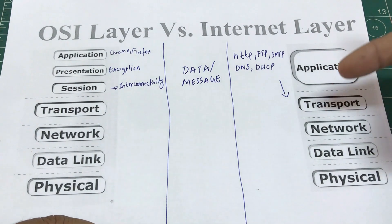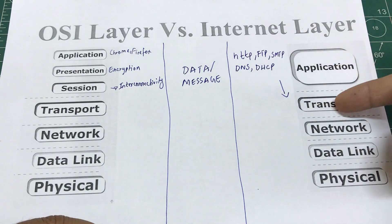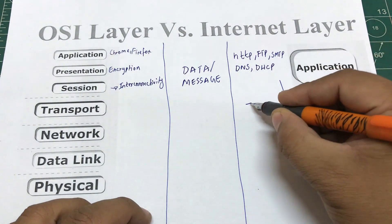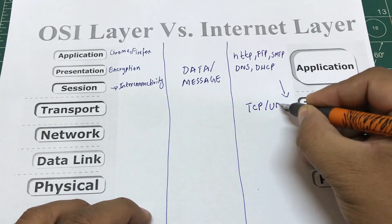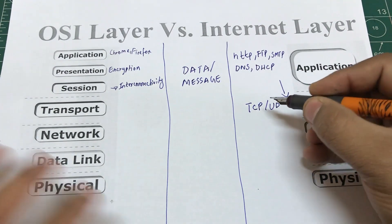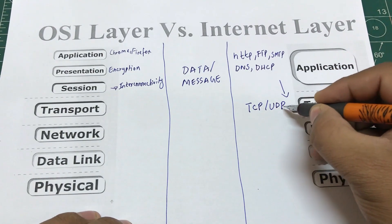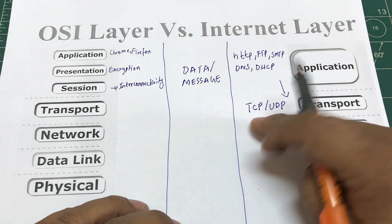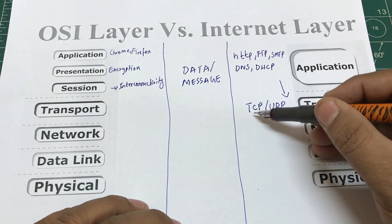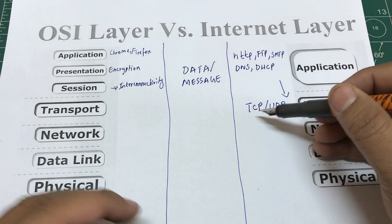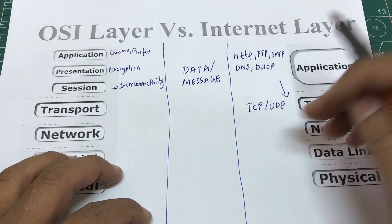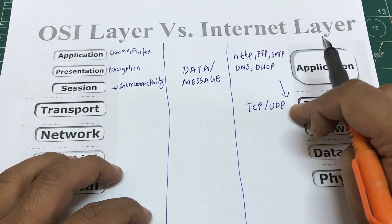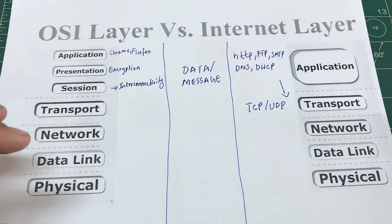The two dominant protocols used by the transport layer are TCP — Transmission Control Protocol — and UDP — User Datagram Protocol. TCP is a reliable protocol while UDP is not a reliable protocol.